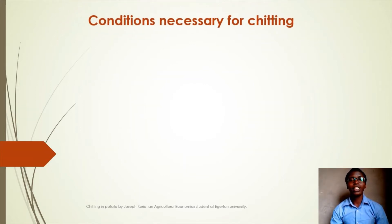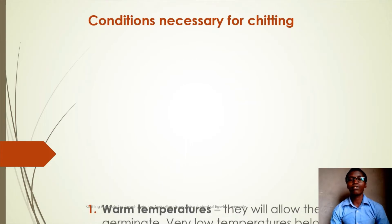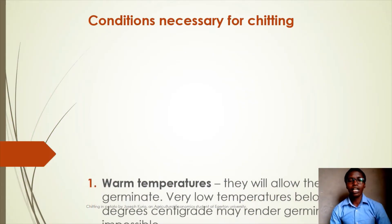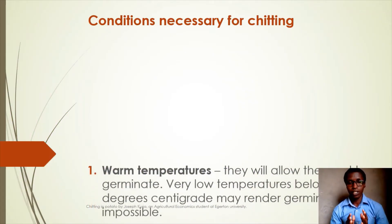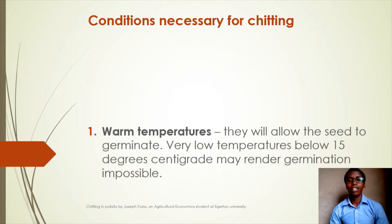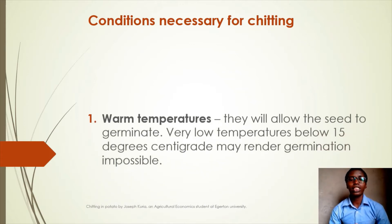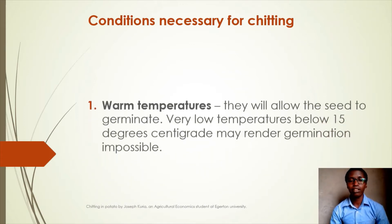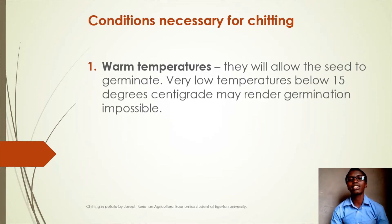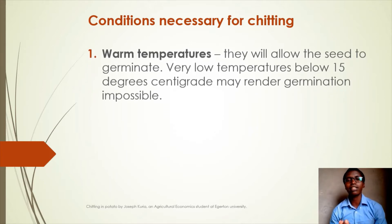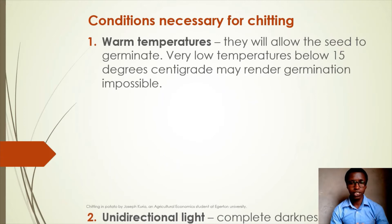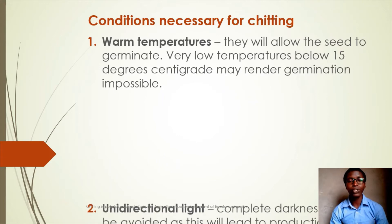What are the conditions necessary for chitting? The first condition is warm temperatures, which allow the seed to germinate. Very low temperatures below 15 degrees centigrade may render germination impossible.